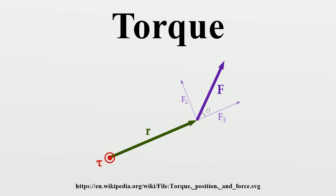Torque is part of the basic specification of an engine. The power output of an engine is expressed as its torque multiplied by its rotational speed of the axis. Internal combustion engines produce useful torque only over a limited range of rotational speeds. The varying torque output over that range can be measured with a dynamometer, and shown as a torque curve. Steam engines and electric motors tend to produce maximum torque close to zero RPM, with the torque diminishing as rotational speed rises.